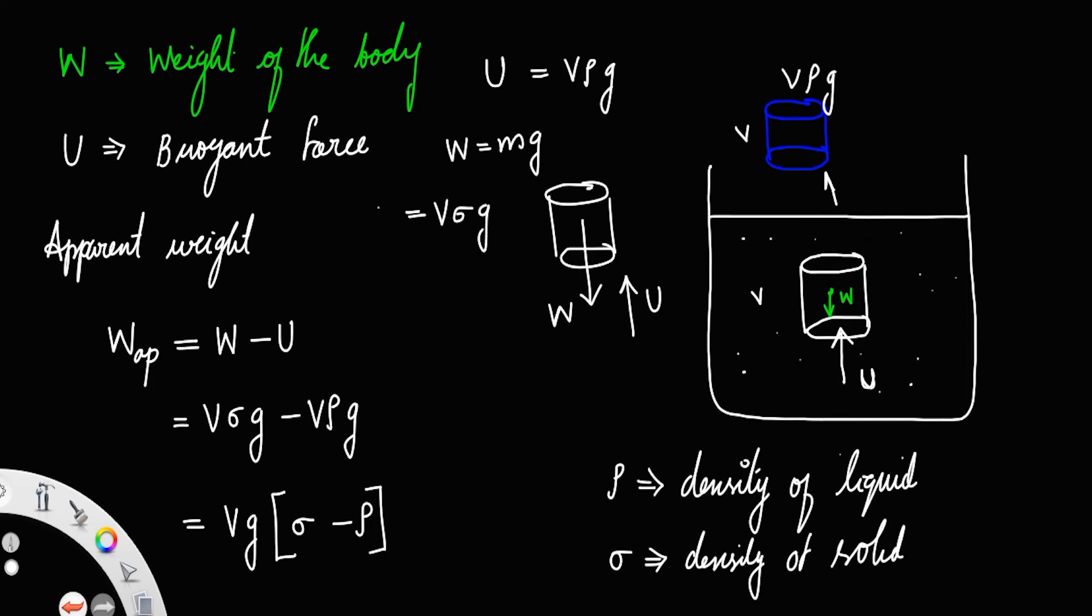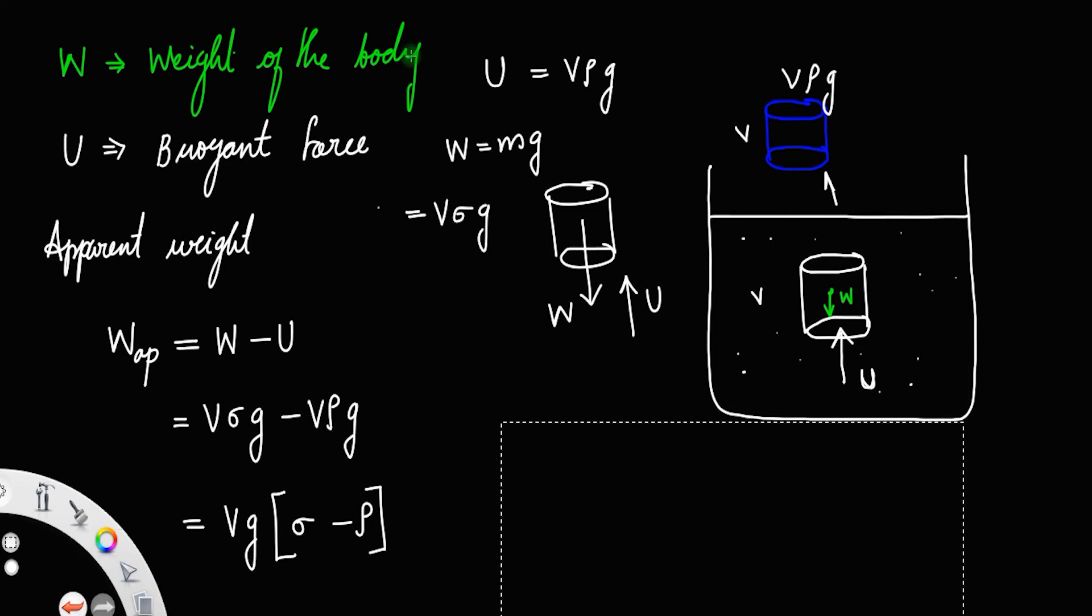Or if you take the sigma outside, you will get apparent weight W_ap equals V g. If you take the sigma outside, then here it will be 1 minus—in order to compensate for the sigma, you have to divide the second term by sigma, so that the sigma and sigma will get cancelled and it will become rho.